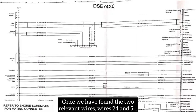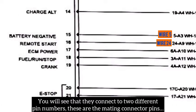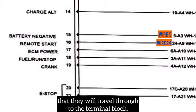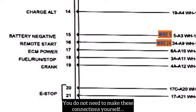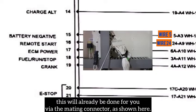Once we have found the two relevant wires — wires 24 and 5 — you can trace these wires on your schematic to the left column. You will see that they connect to two different pin numbers. These are the mating connector pins that they will travel through to the terminal block. You do not need to make these connections yourself; this will already be done for you via the mating connector, as shown here.